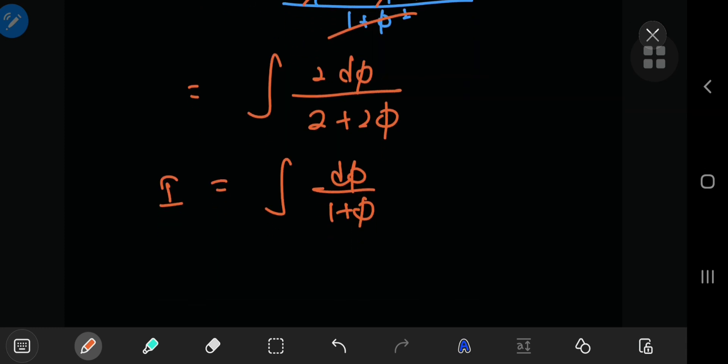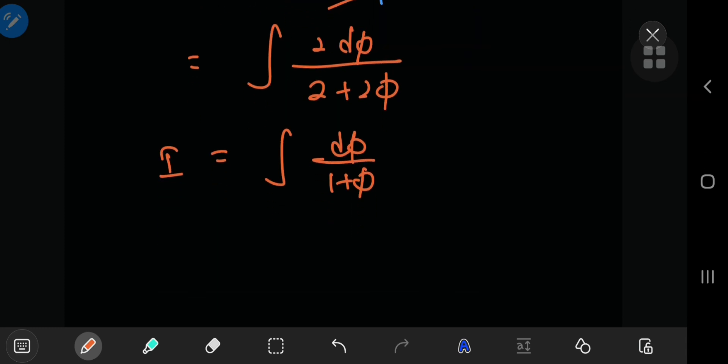Yeah, that is a pretty good looking before and after picture we have thanks to the Weierstrass substitution. This integral can be evaluated—you can write it as the natural log of 1 plus phi, plus the constant of integration C.